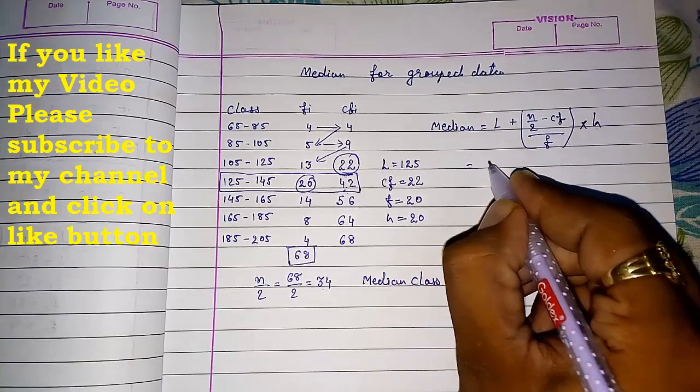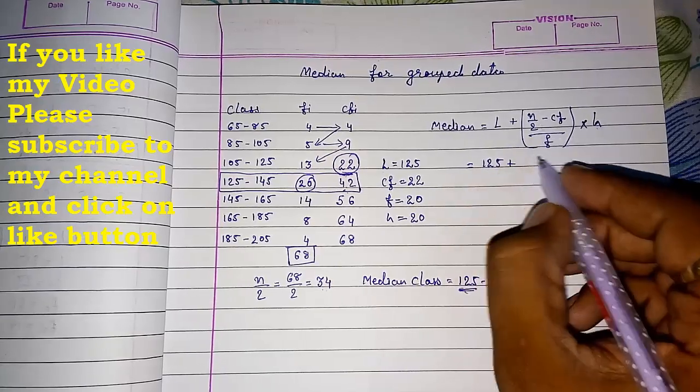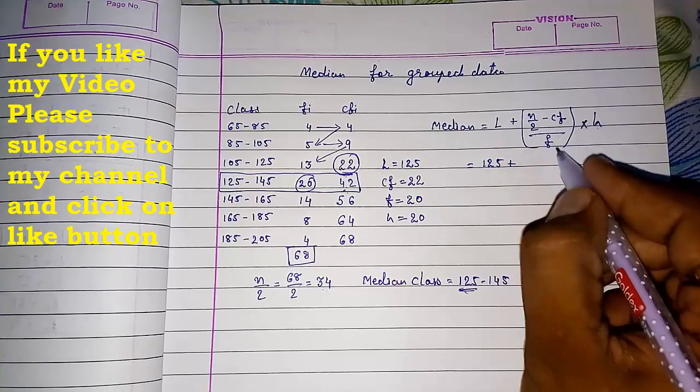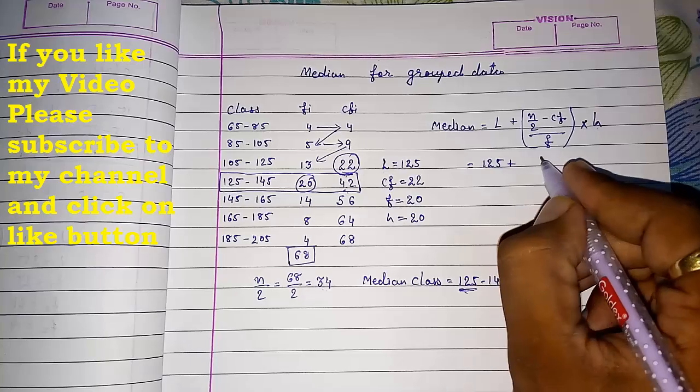Now we have all the values. One more mistake students make is they first add. Look here, we have to use DMAS. First solve this, then multiply, and at last add with L.